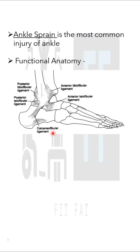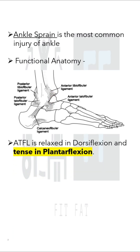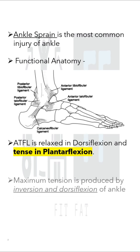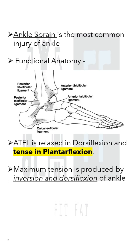The ATFL runs horizontally from the anterior edge of the lateral malleolus to the neck of the talus. It is relaxed in dorsiflexion and tense in plantar flexion. In plantar flexion, the ligament changes its orientation from horizontal with respect to the floor to almost vertical.